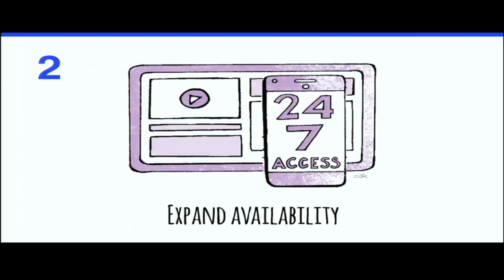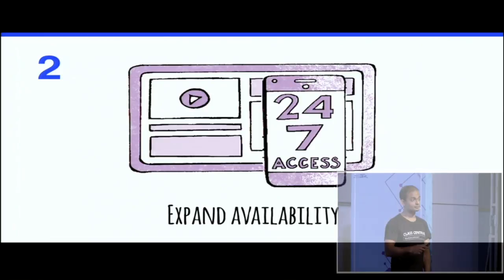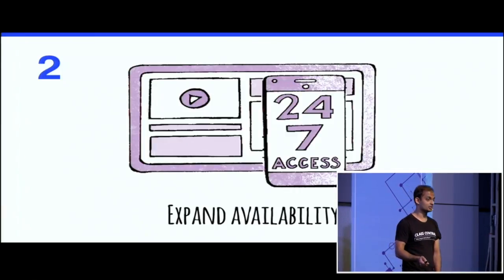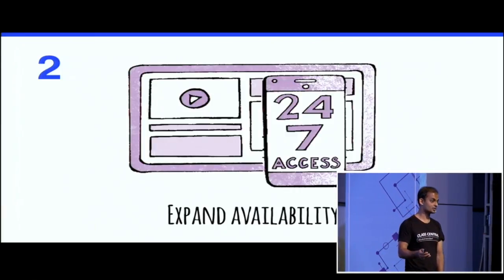The second step is increasing availability. When MOOCs started, they were session-based with a start date, end date, and offered once or twice a year based on university or professor schedules. But that made it difficult to monetize a course if it's only available three to four months a year. So MOOC providers tweaked their model so that courses, once launched, are generally run in a self-paced mode — available throughout the year — which increases monetization because there are more courses users can sign up for.